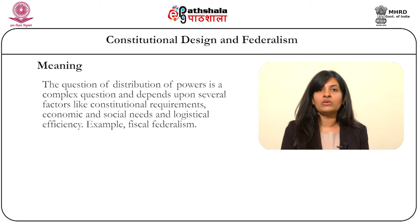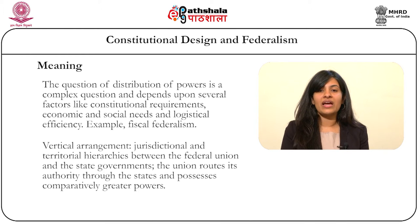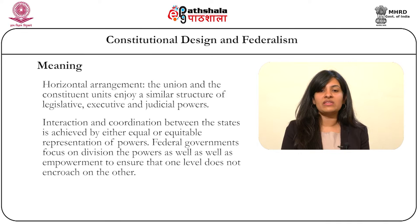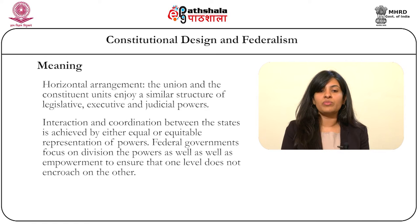Federal systems further follow vertical arrangements and horizontal ones. In the former, jurisdictional and territorial hierarchies are established between the Federal Union and the State Governments, where the Union, in some cases, may possess greater powers than them. In the horizontal structure, the Union and the constituent units enjoy a similar structure of legislative, executive and judicial powers. At this level, interaction and coordination between the states are sought to be achieved by equal or equitable representation of powers. Federal governments not only strive to divide powers across multiple levels of government, but also to empower them and ensure that one does not encroach upon the other.